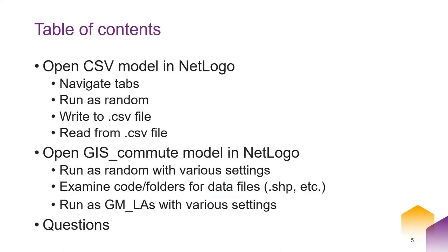Here's a brief look at what we're going to cover in today's session. We're going to open a model called CSV Model in NetLogo, talk about navigating tabs, run it as random, write to a CSV file and read from a CSV file. We'll also open a second model called GIS Commute, run it with various settings, look at the code and folders for data files, and run it with non-random settings using imported shapefiles. Then there's time for questions.